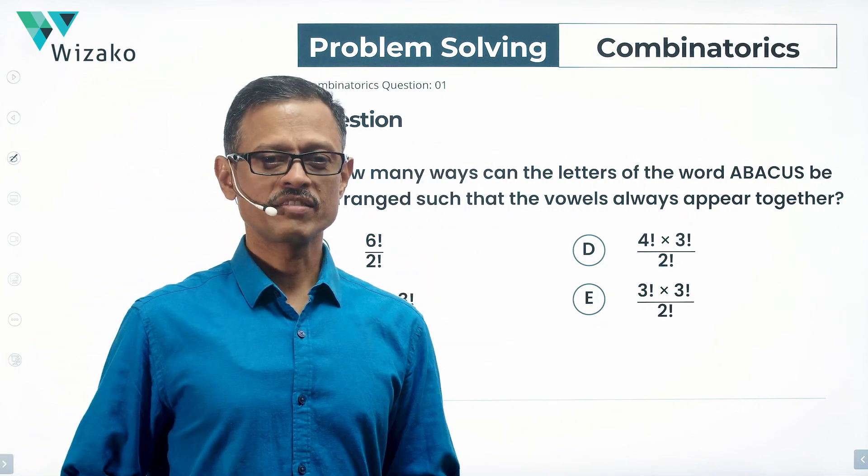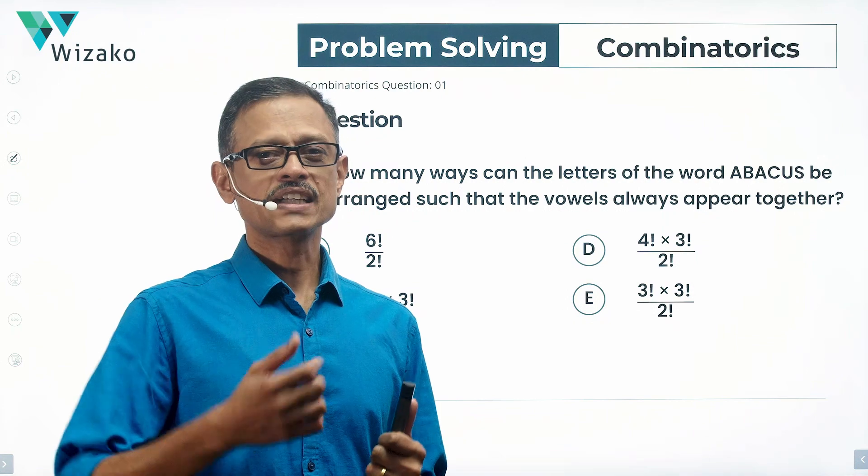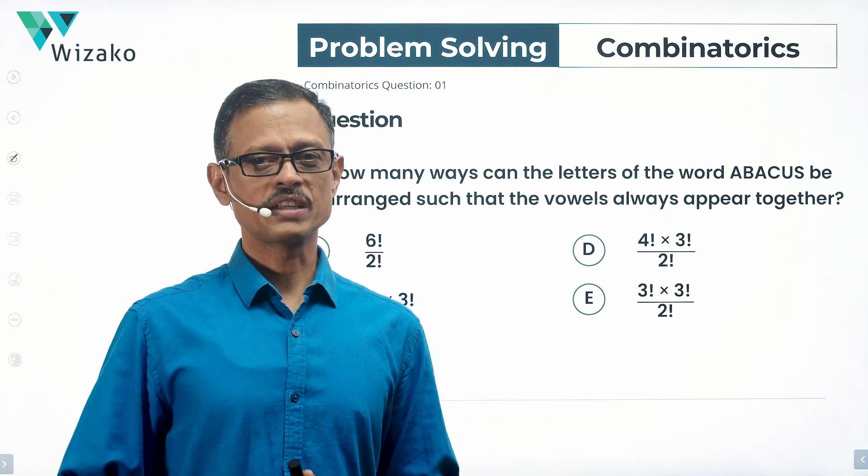This one is a GMAT problem-solving practice question from the topic permutation combination. Rearranging letters of the word with a constraint thrown in is the concept tested in this question.